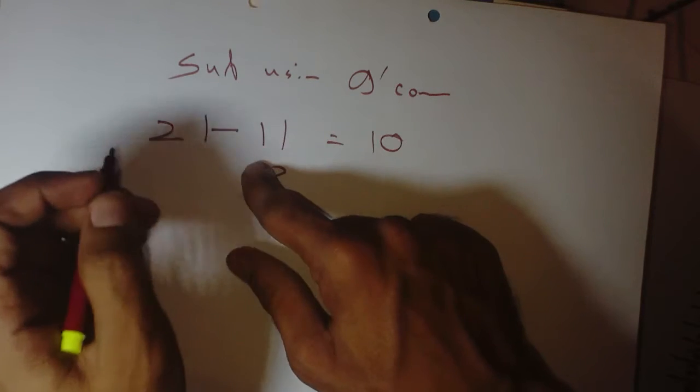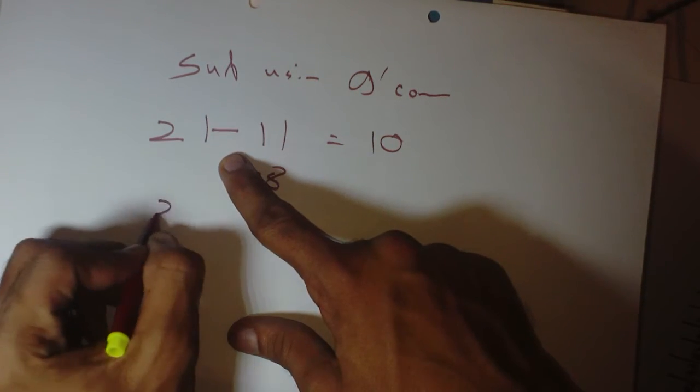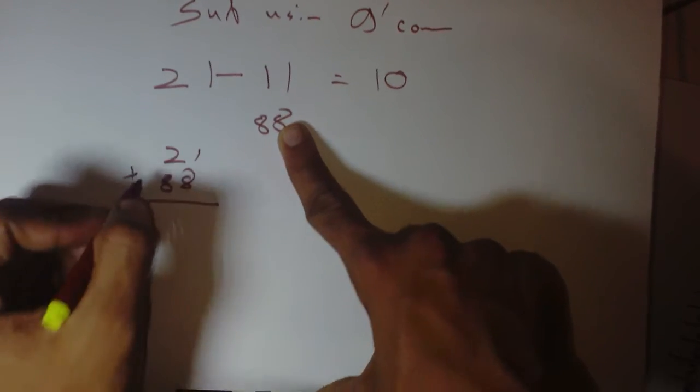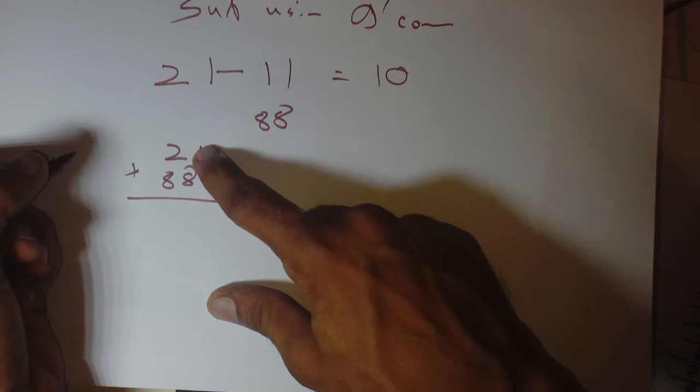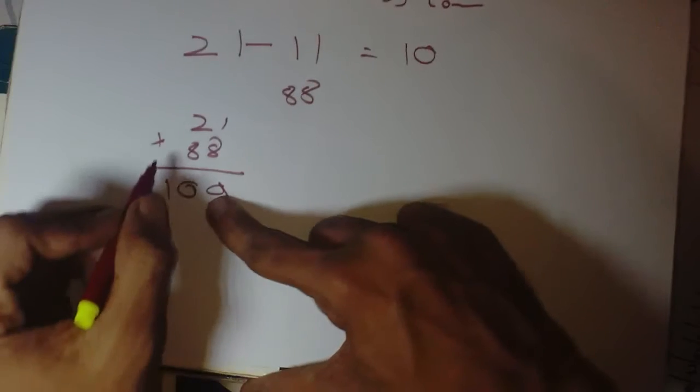What I have to perform here is I have to add these two values: 21 plus 88. What will be the addition? 8 plus 1 is 9, 8 plus 2 is 10, okay.